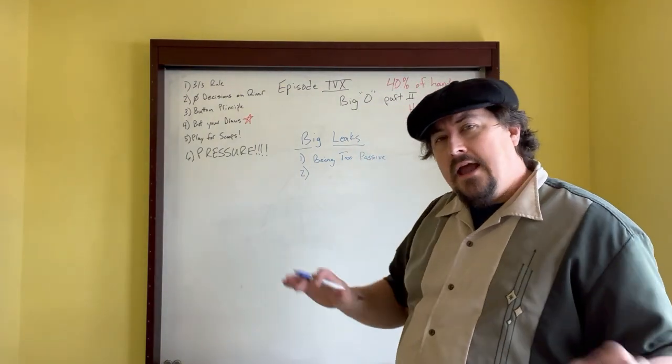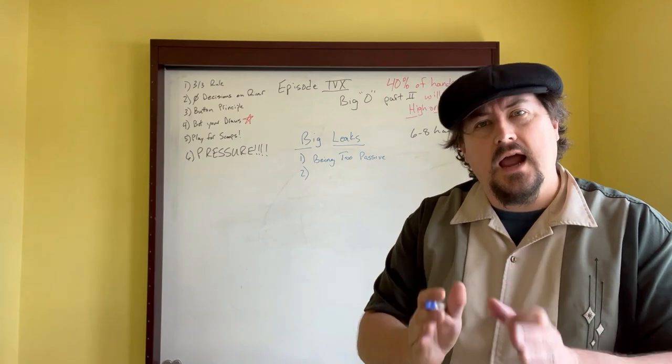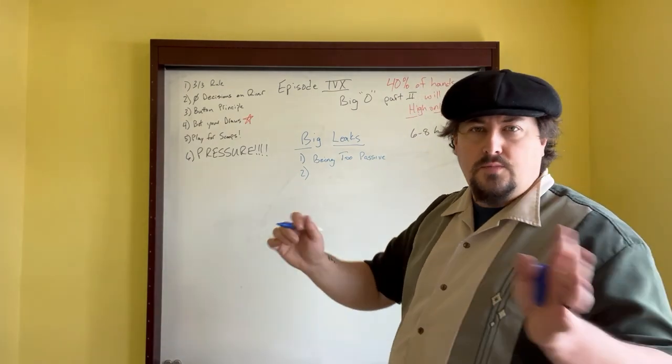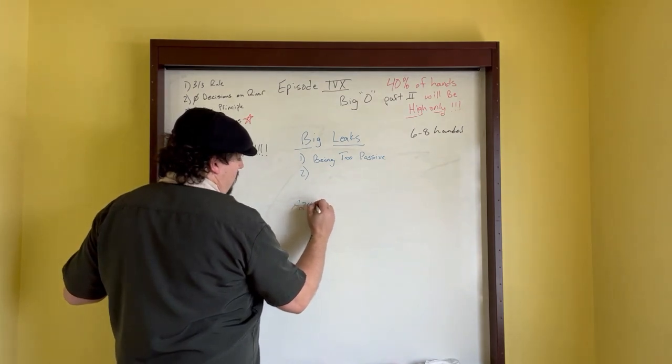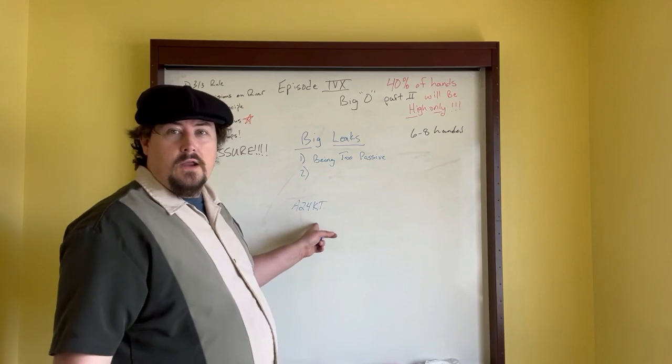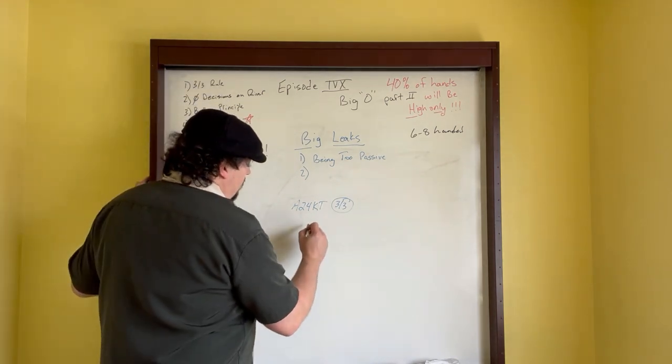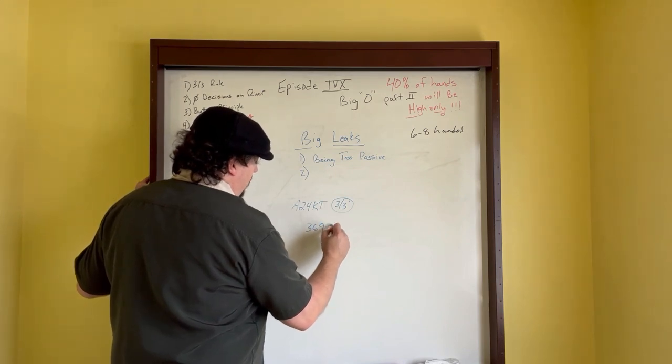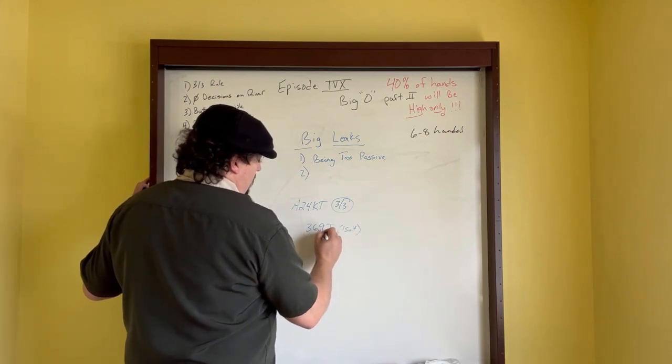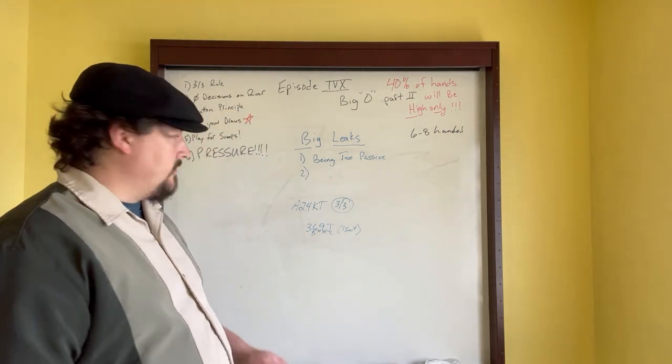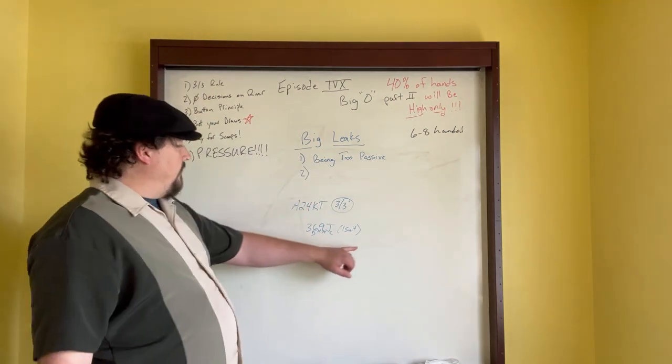Let's take an example of being too passive. Let's say you have a hand that's kind of a two-way hand. Keep in mind, 40% of the time it's going to go to one person. Let's take a hand, for example, like you have ace, deuce, four, king, ten. Here we're applying the 3-3 principle. We have three to Broadway, three to a wheel. Let's say the board is three, six, nine, jack. Let's say there's one suit out there, like you've got heart, heart, and then club and diamond. Somebody is drawing the heart. You can even say you have a bad heart draw or no heart draw at all.